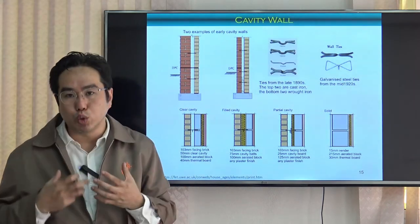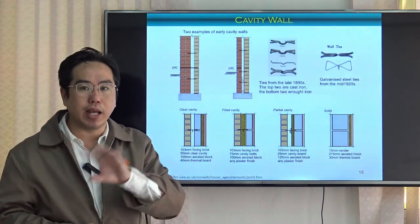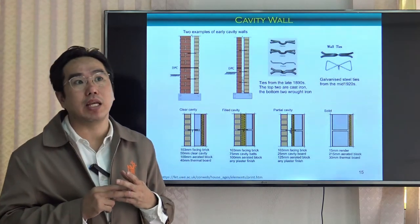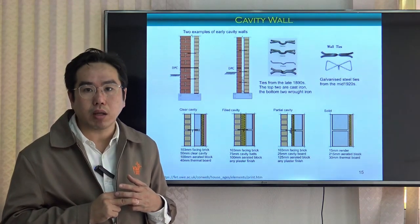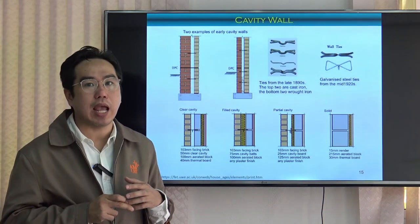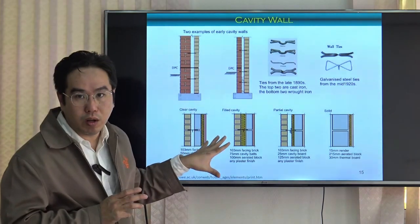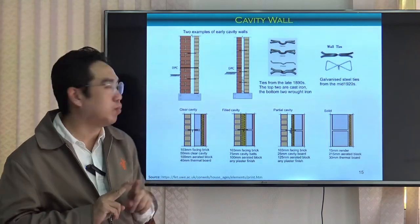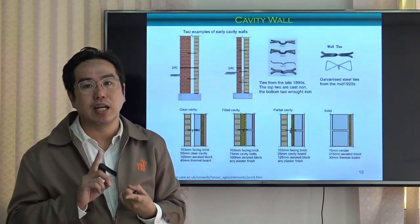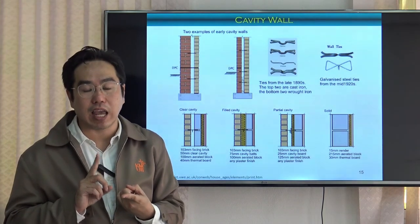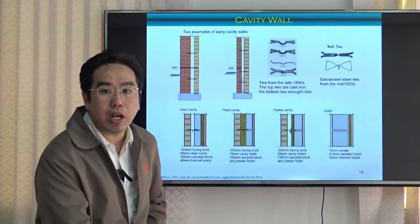From the Egyptian era until today, we have had a continuous evolution and development of the brick and masonry unit production. Nowadays we use the lightweight concrete block as the main component. This will be the end of my lecture about masonry. Thank you very much.